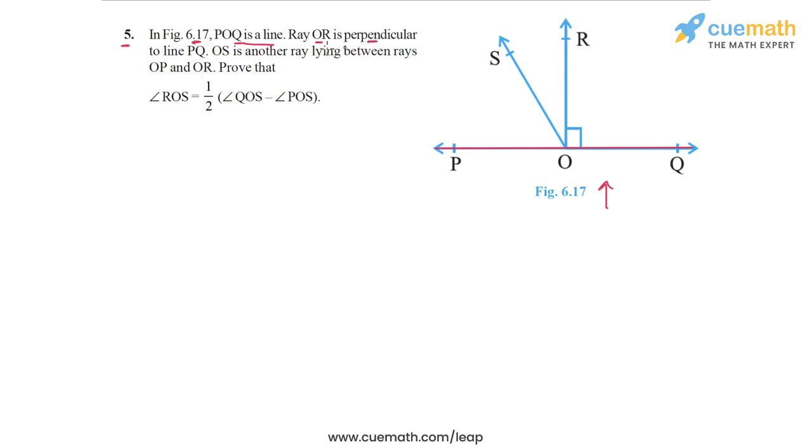Ray OR is perpendicular to line PQ. This is why we see this perpendicular symbol here. OS is another ray lying between rays OP and OR.